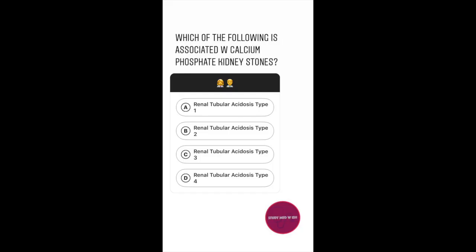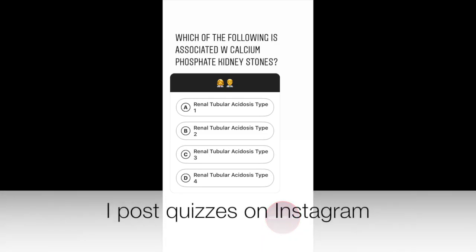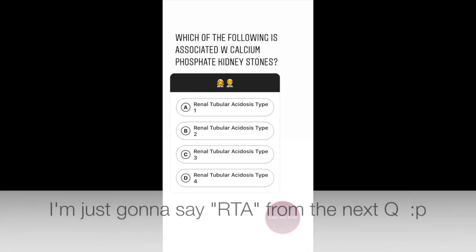Question number one. Which of the following is associated with calcium phosphate kidney stones? Option A: Renal tubular acidosis type 1. Option B: Renal tubular acidosis type 2. Option C: Renal tubular acidosis type 3. Option D: Renal tubular acidosis type 4.